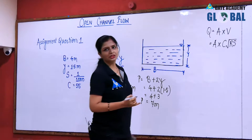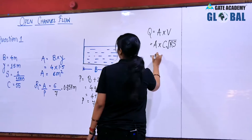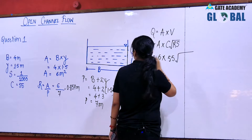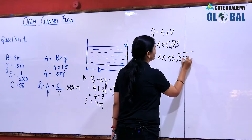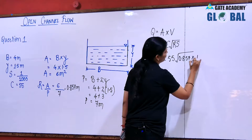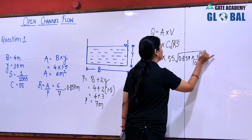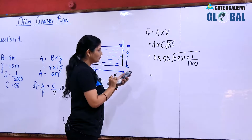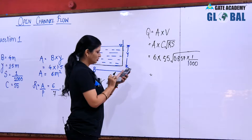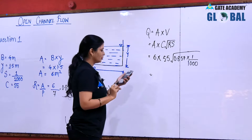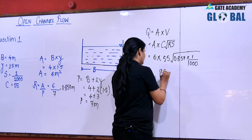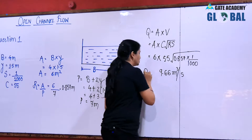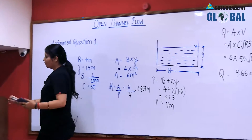Now I substitute the values for initial discharge: area is 6 meter square, Chezy's constant is 55, hydraulic radius R is 0.857, and slope is 1 in 1000. So Q = 6 × 55 × √(0.857 × 1/1000), which gives the initial discharge as 9.66 meter cube per second.